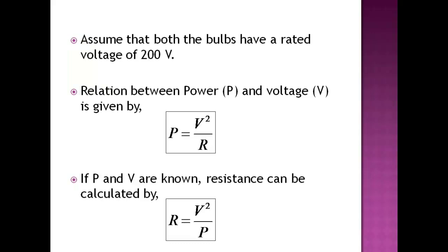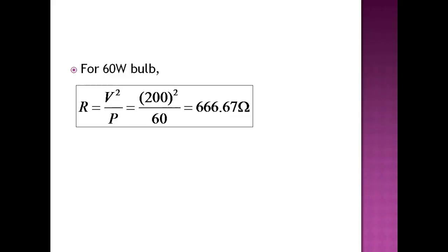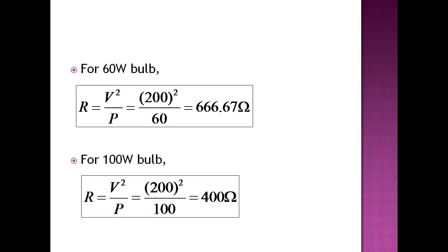So if P and V are known, resistance can be calculated by R is equal to V square by P. Let us now find the resistance of both the bulbs. Using this formula, for 60 watt bulb we get resistance of 666.67 ohms, and for 100 watt bulb we get resistance as 400 ohms.